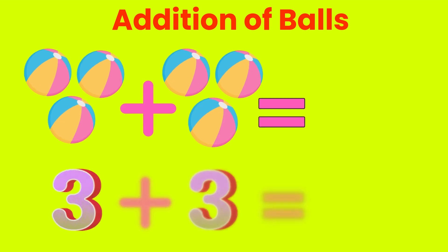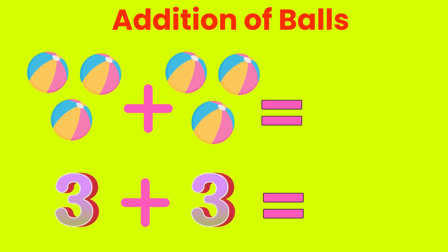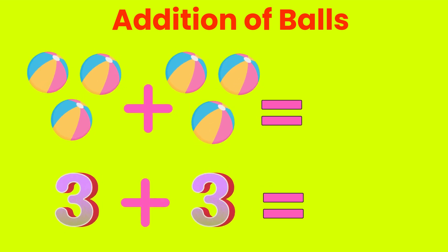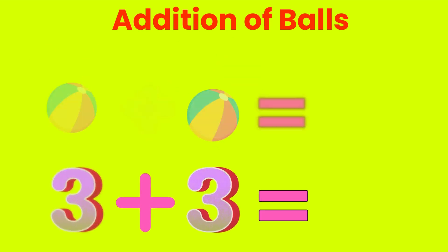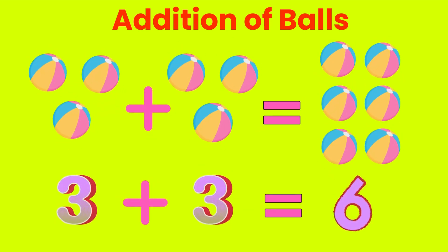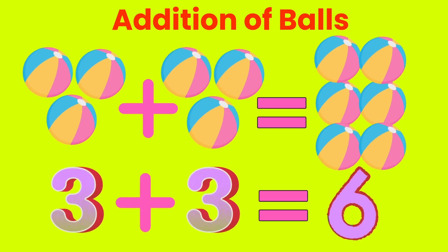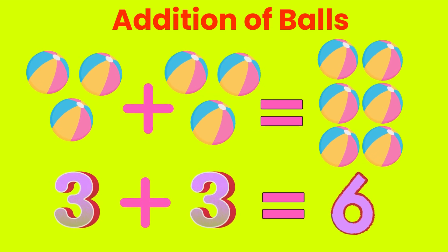Let's do addition of balls. 3 balls plus 3 balls. Add 3 plus 3. Answer is... 3 balls plus 3 balls. Total is 6 balls. 3 plus 3 is 6.